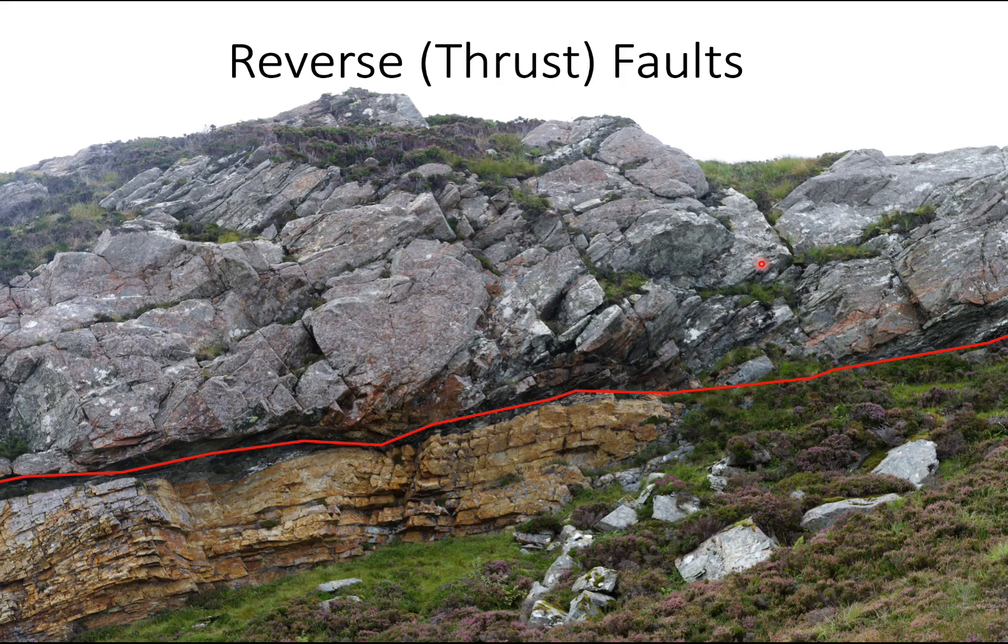The opposite of that are called thrust faults or reverse faults. This is for compression rather than tension in the crust and you end up producing very low angle faults. This is actually part of the moine thrust here.